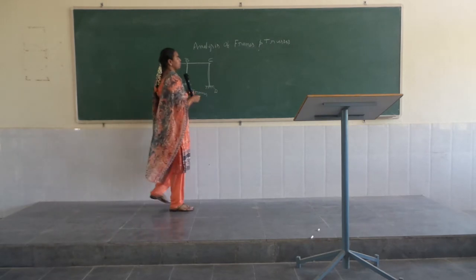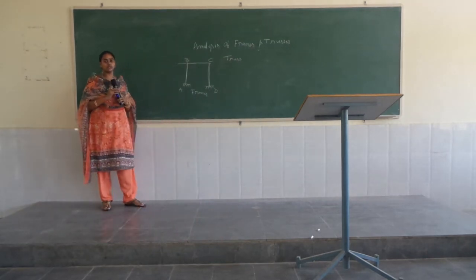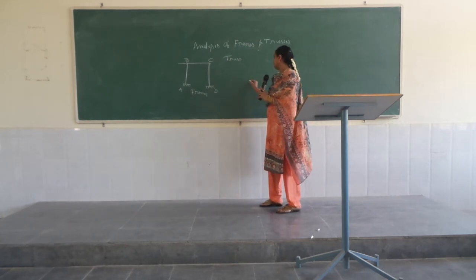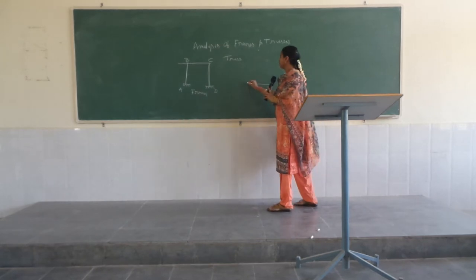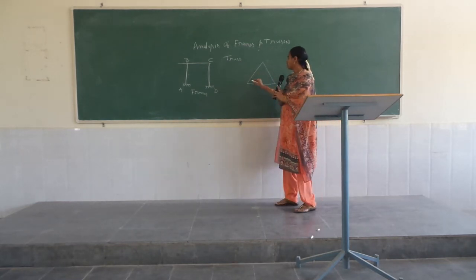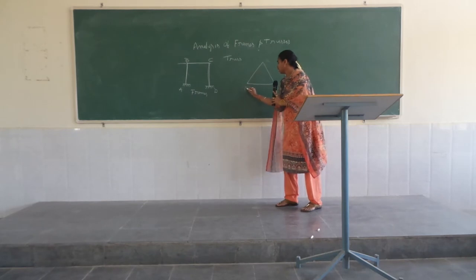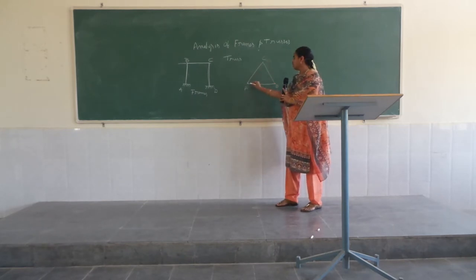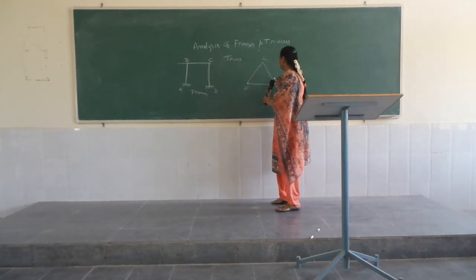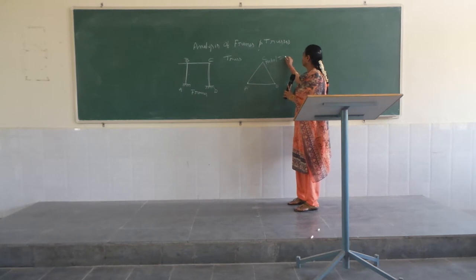Next, I am going to explain about a truss. A truss is nothing but a structural member and it is a combination of triangular units which are combined together at a particular point, which is nothing but a joint. So in the example, the triangular unit A, B, C and a combination of such members together forms a structure, which is nothing but a truss. Here points A, B, and C are nothing but the nodes or joints.